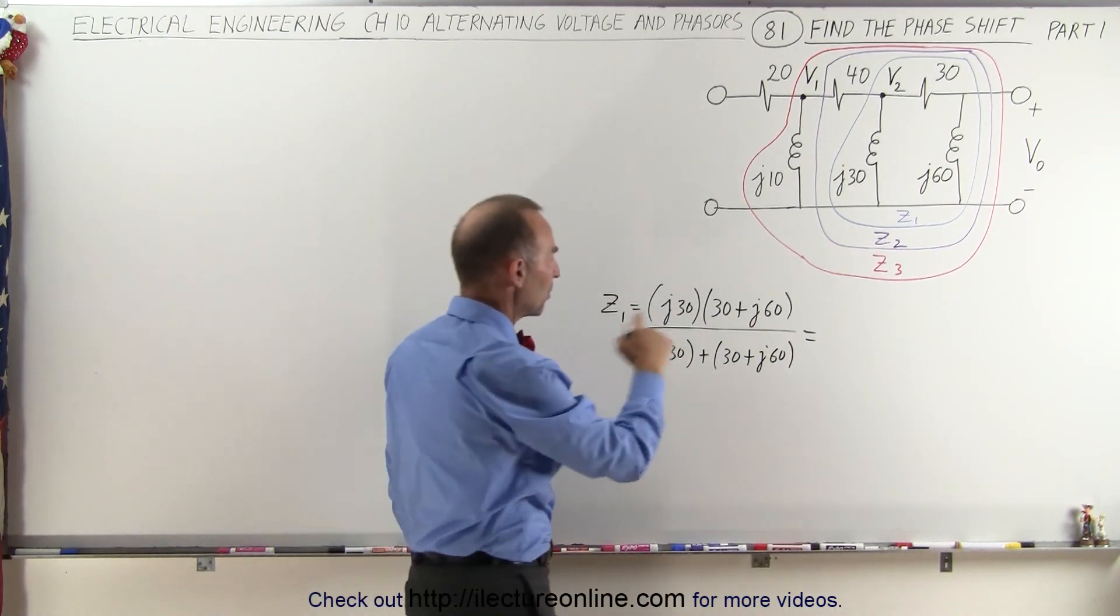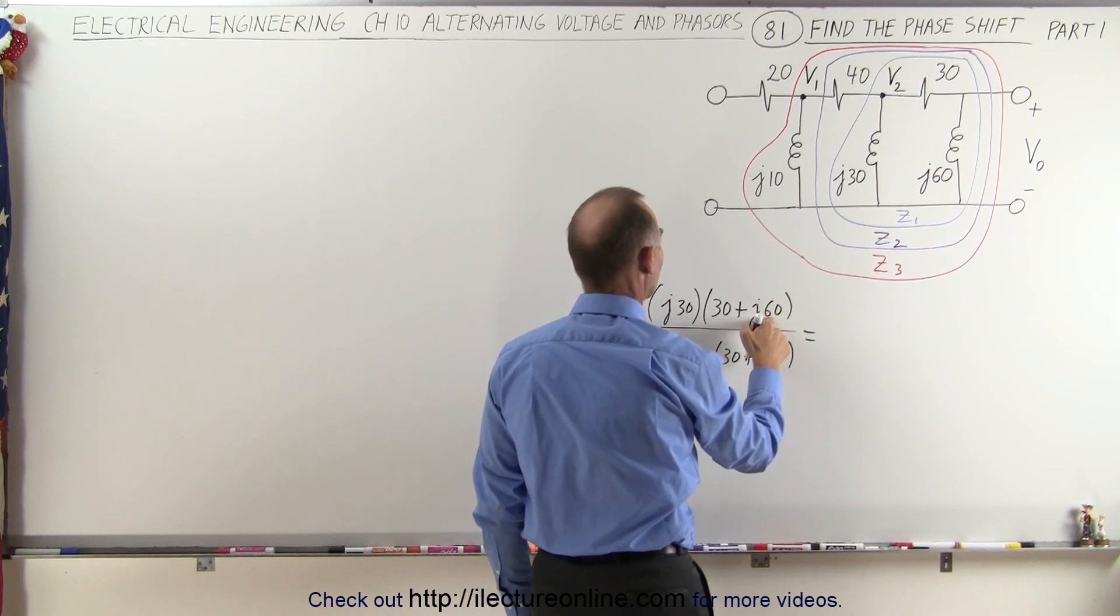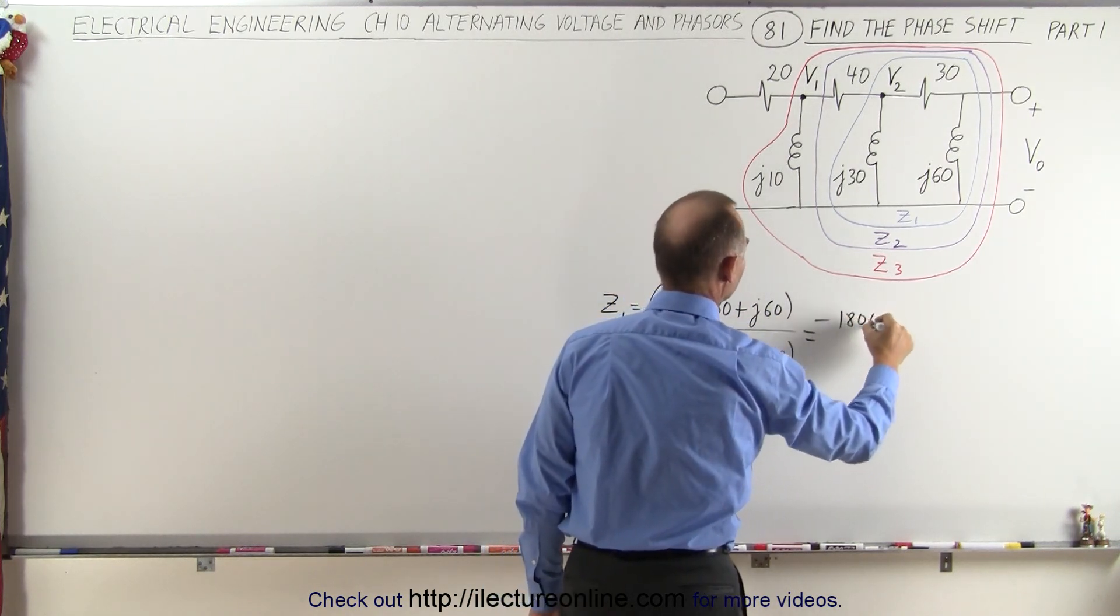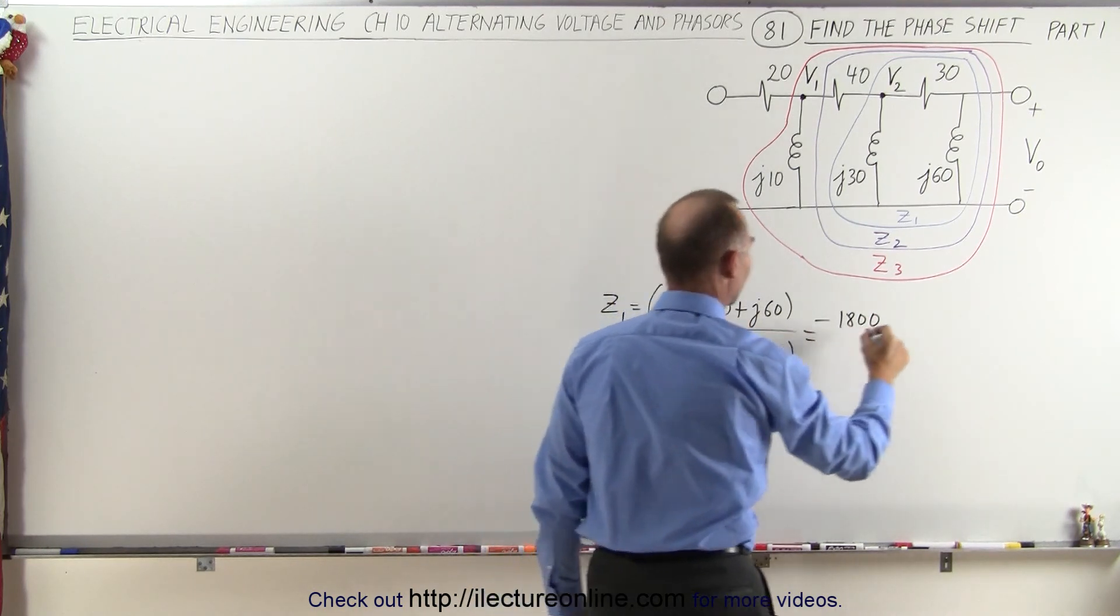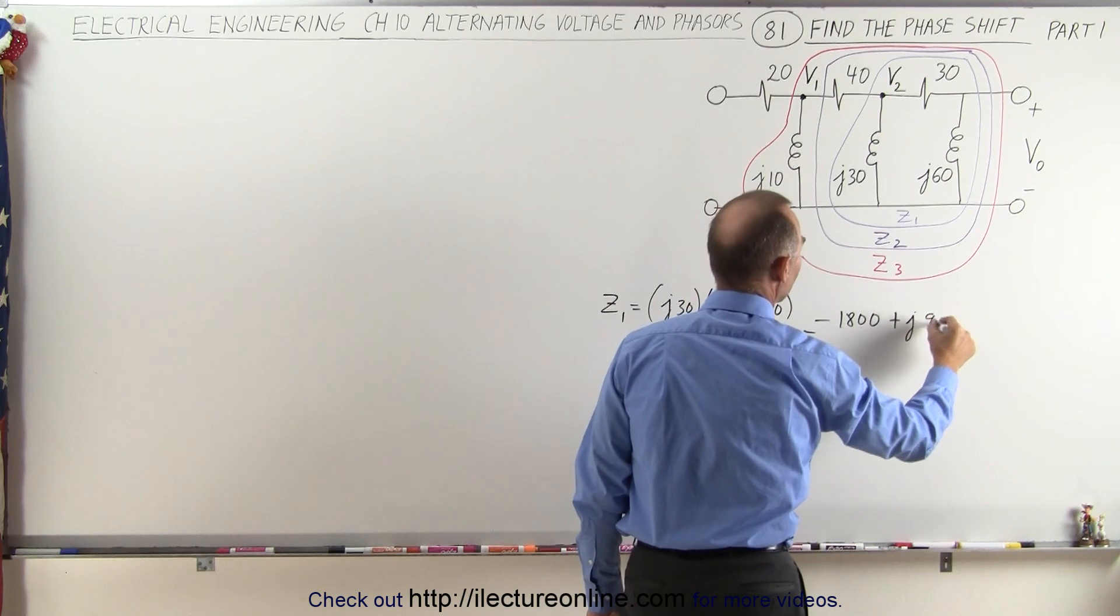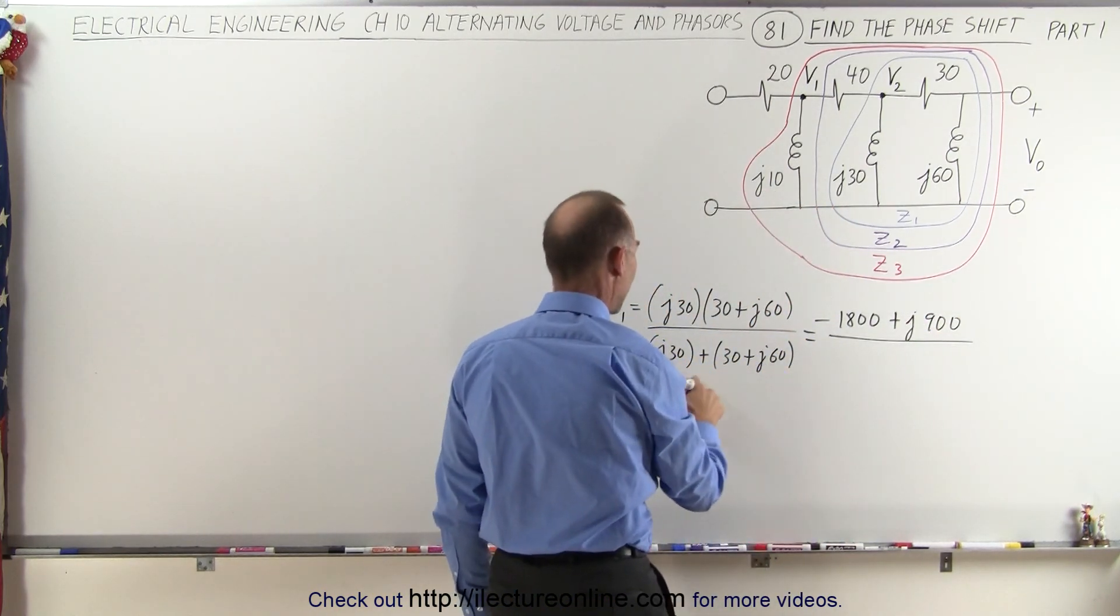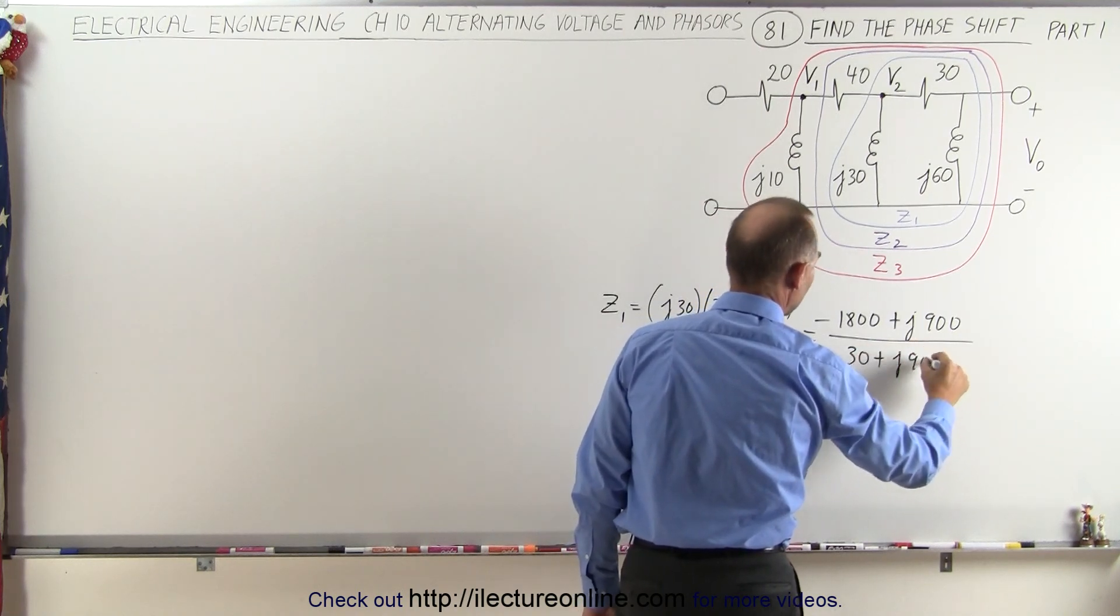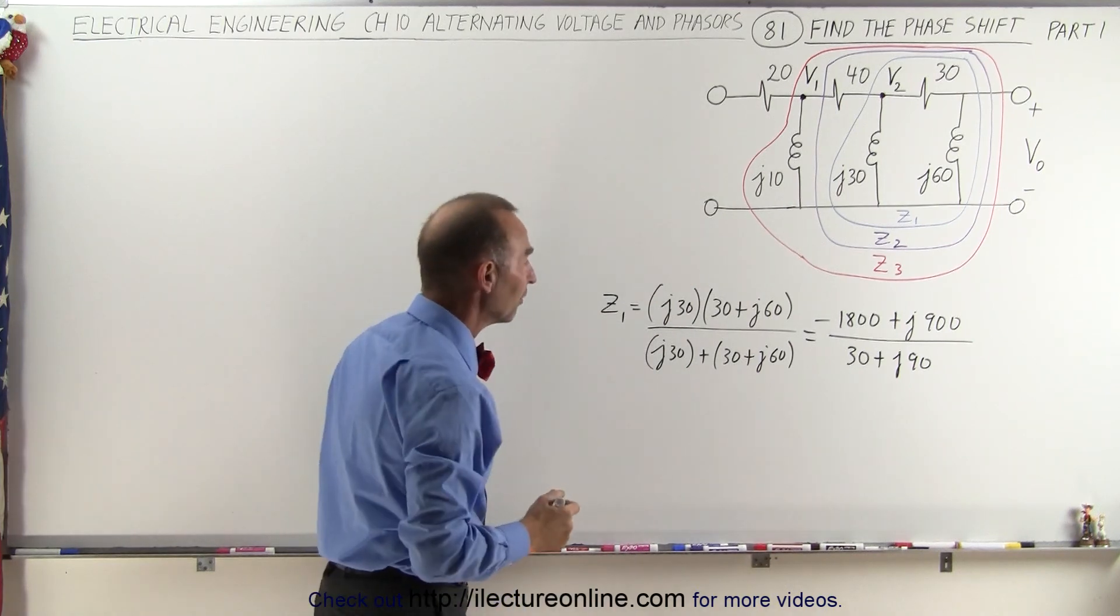Z1 is going to be equal to J30 multiplied times 30 plus J60, all divided by the sum of J30 added to 30 plus J60. That will give us, first when we multiply, J30 times J60, that's 1800 times a negative, that's minus 1800, and when we multiply this times this, that gives us plus J900 in the numerator, divided by, in the denominator when we add, we get 30 plus J90.